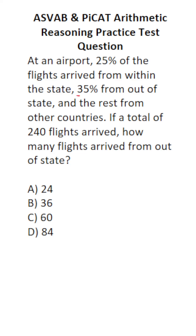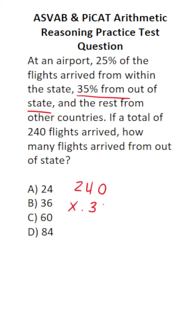So right here, we know 35% of them arrive from out-of-state. So we're going to take the total number of flights that arrived — that is 240 — and simply multiply it by the decimal equivalent of 35%, which is 0.35.